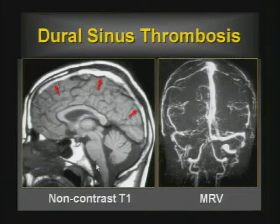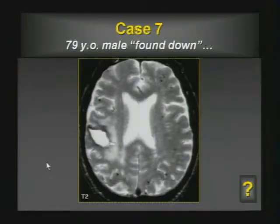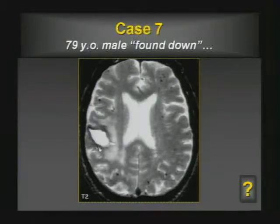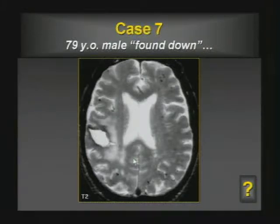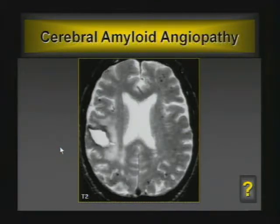You can see the typical T1 sagittal with methemoglobin in the superior sagittal sinus, and the MRV showing asymmetric flow-related enhancement in the transverse sinus. Keep those blinders off: this elderly patient has multiple hemorrhagic lesions — one big hematoma and all these little black punctate areas reminiscent of DAI. But this is a case of cerebral amyloid angiopathy. When you see multiple subcortical hemorrhagic lesions, yes it may be DAI, but it could also be cerebral amyloid angiopathy. The patient's age and history are key.